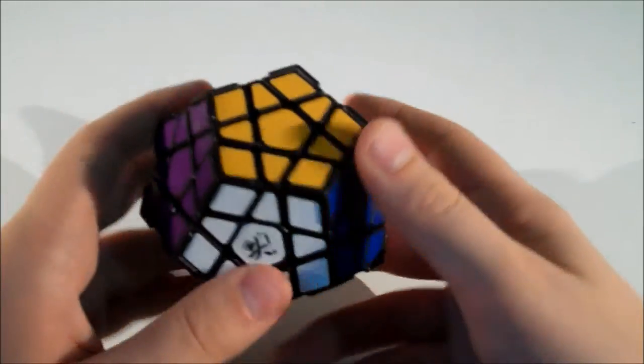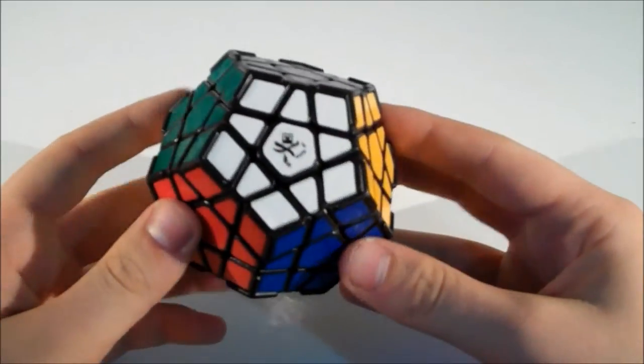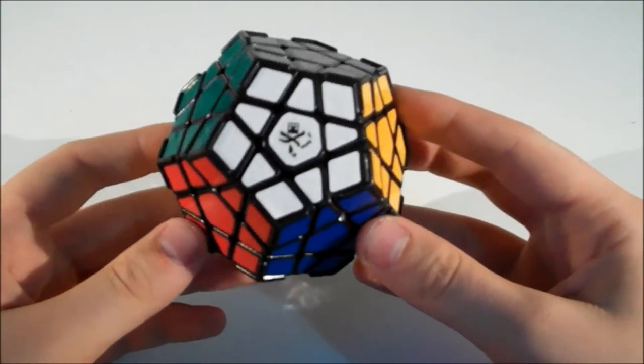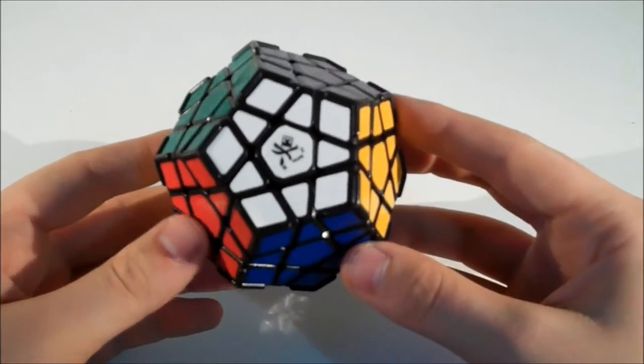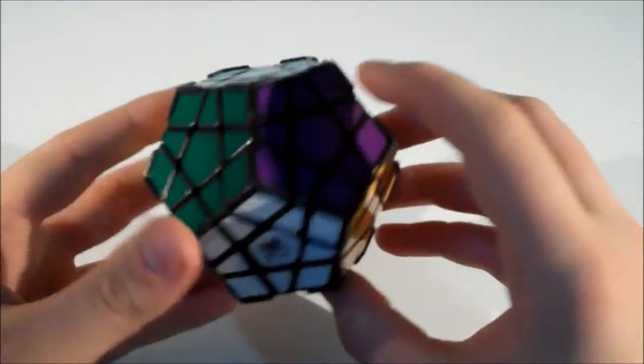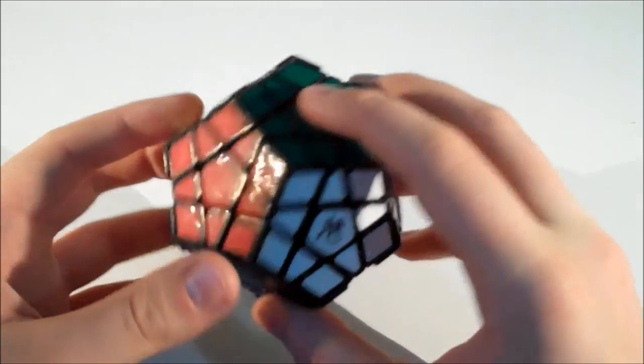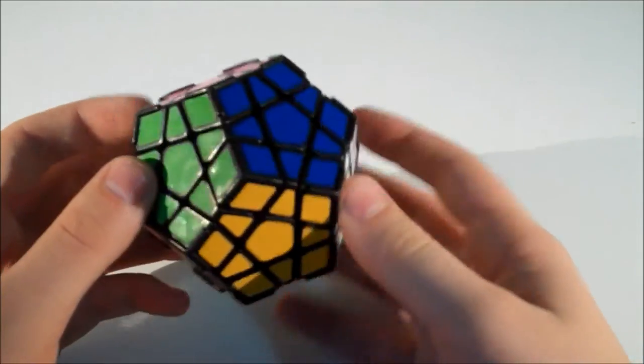The color scheme on this puzzle is the same as on normal Megaminx, where opposite faces are different shades of the same color. For example, opposite blue will have a light blue, and opposite dark green will have a light green, and so on.